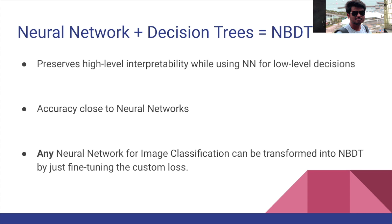We have Neural Backed Decision Trees, or NBDTs. They are as interpretable as decision trees. Unlike neural networks, NBDTs can output intermediate decisions for a prediction. For example, given a tiger or cat image, a neural network may just output 'cat' or 'tiger,' but the NBDT explains how it arrived at that decision — saying it's an animal, then a carnivorous animal, then concluding it's a cat.